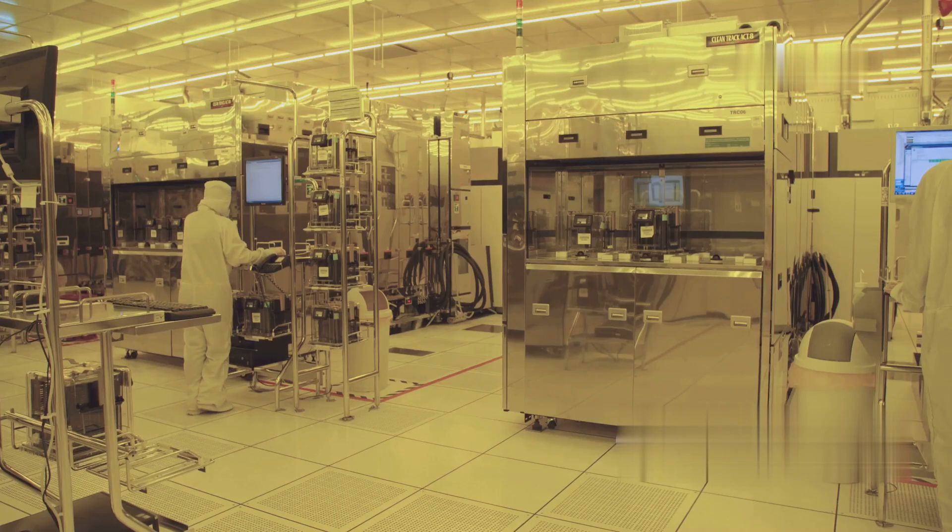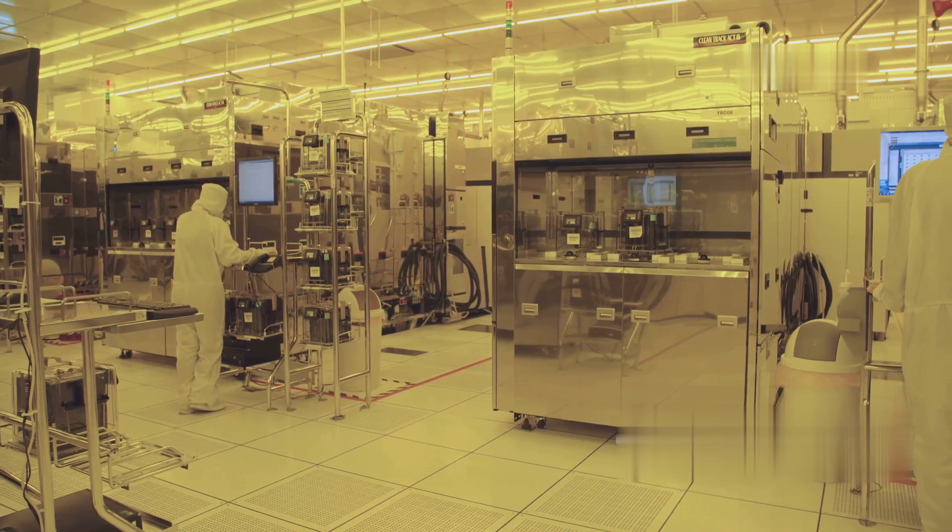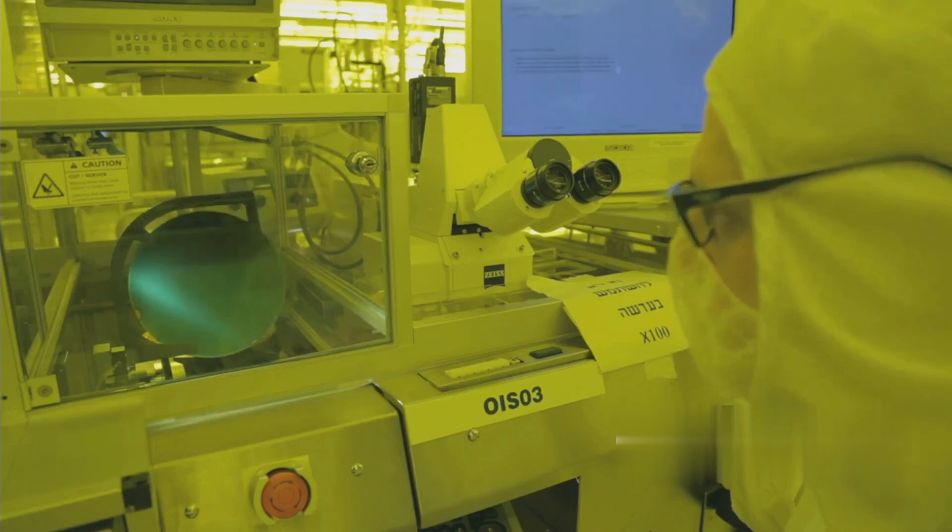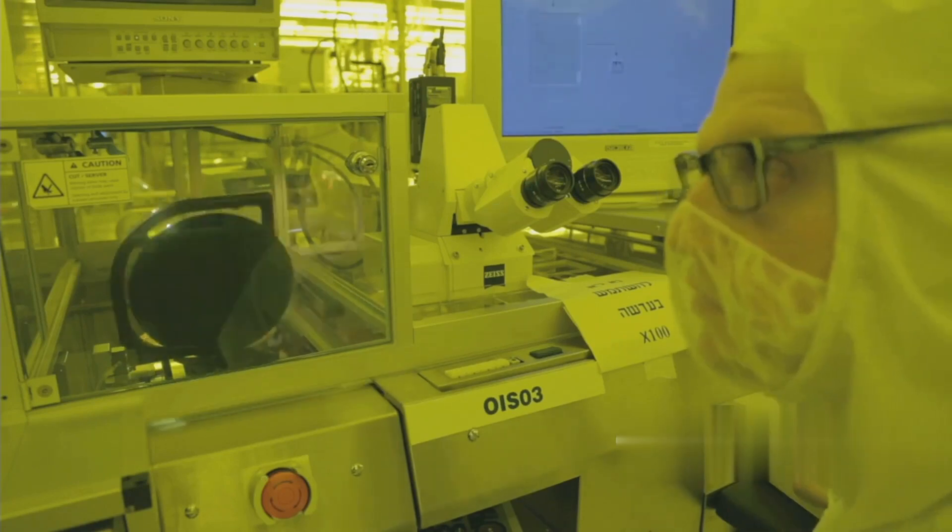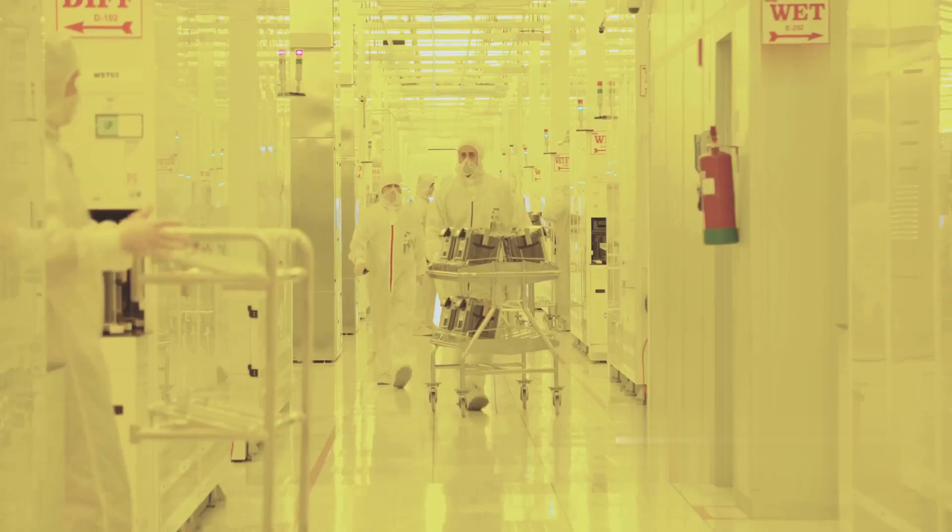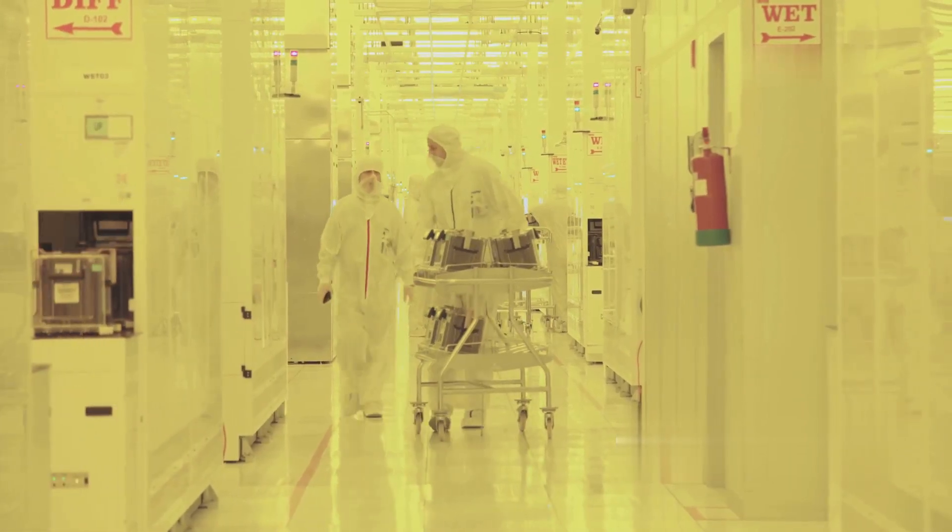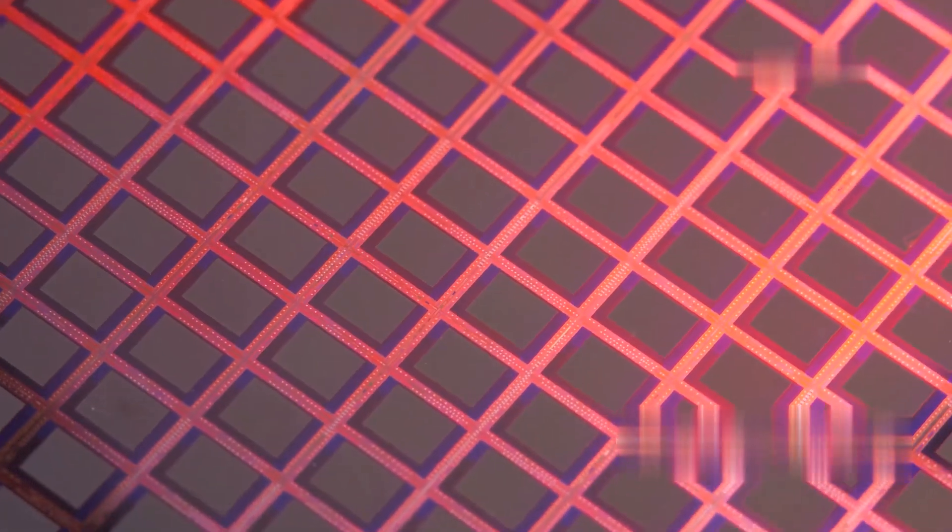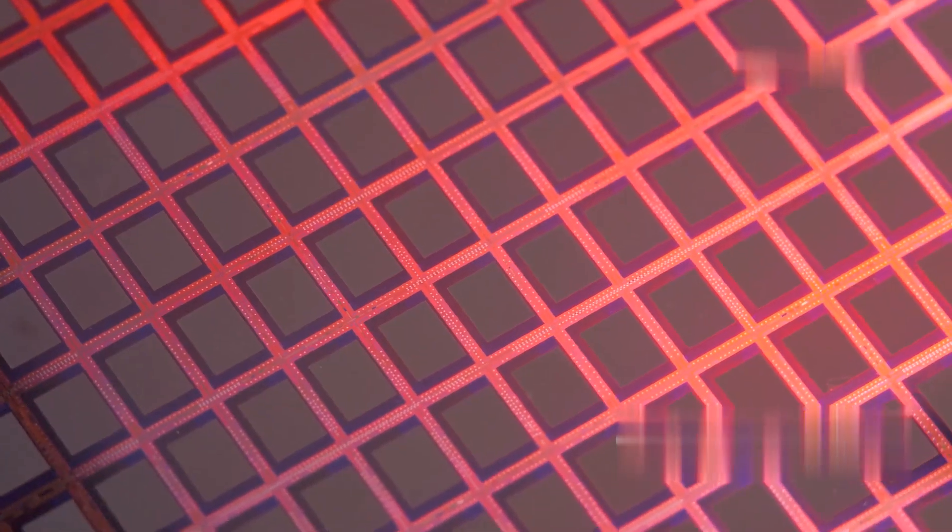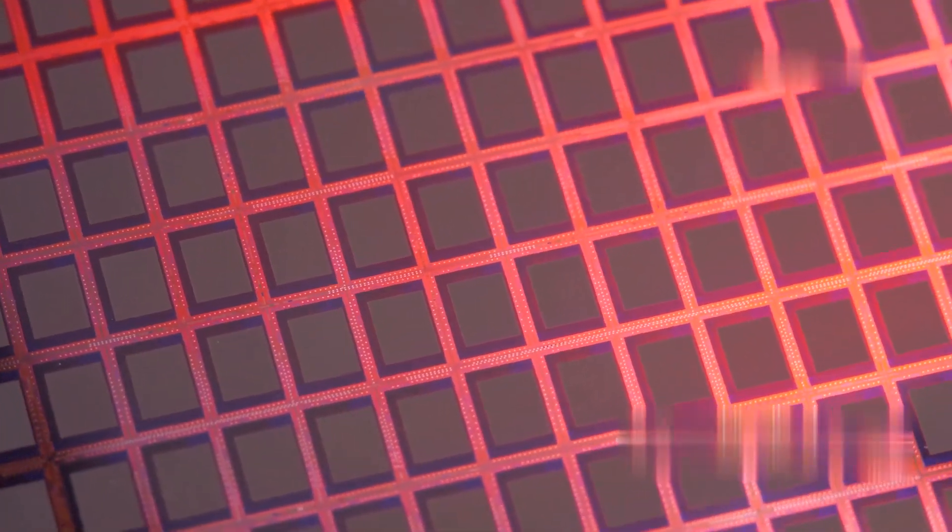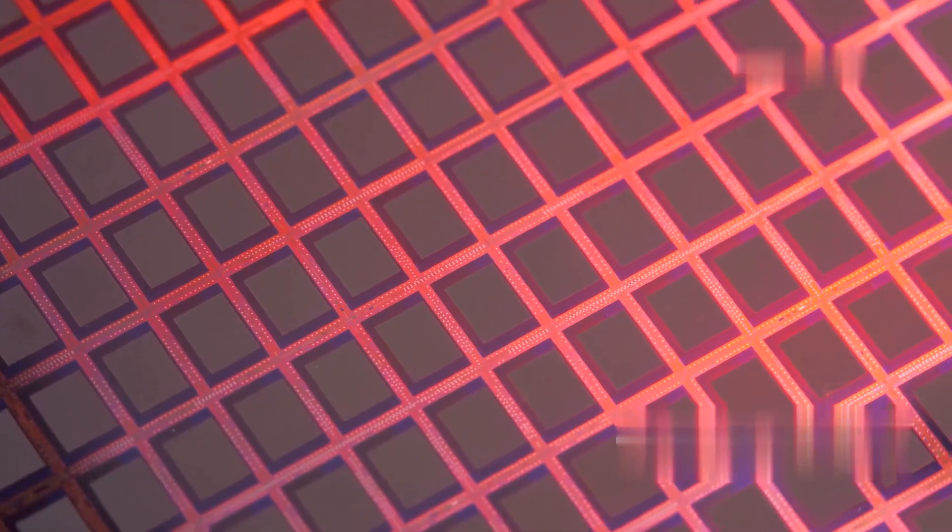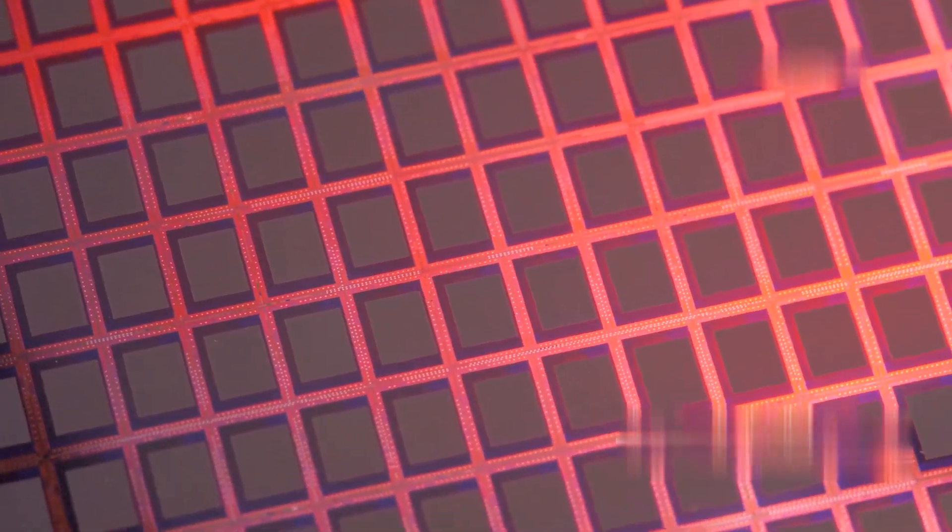Further purification is achieved through a process called the Siemens process. In this method, the silicon is reacted with hydrogen chloride gas to form trichlorosilane, a volatile liquid. The impurities remain in the solid residue, effectively separating them from the silicon. The purified trichlorosilane is then reduced back to silicon using hydrogen gas in a reactor. This process deposits ultra-pure silicon onto thin rods, forming polycrystalline silicon.